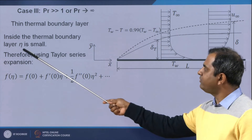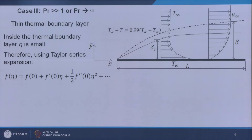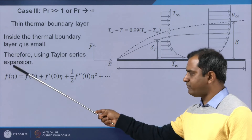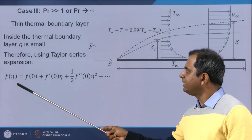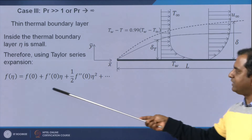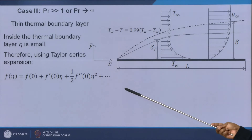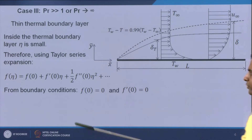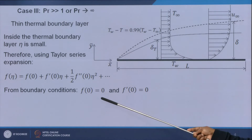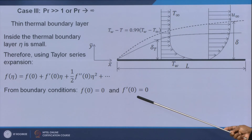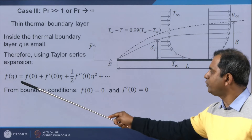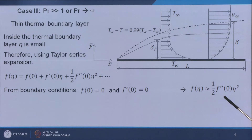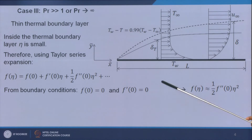Inside the thermal boundary layer, η is very small because the thermal boundary layer thickness is thinner than the velocity boundary layer thickness, limiting η to a small value. Since η is very small, we can write f as a Taylor series expansion. From the boundary conditions of the velocity boundary layer, f(0) = 0 and f'(0) = 0, so the first two terms cancel, giving f ≈ ½f''η², neglecting higher-order terms.